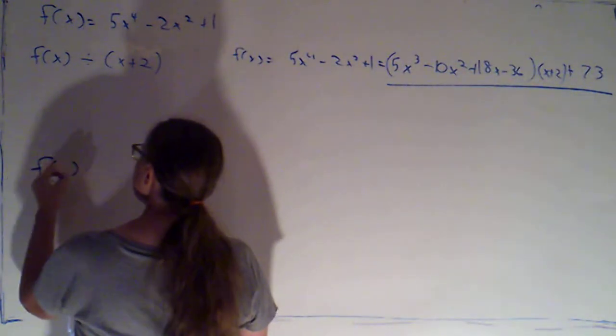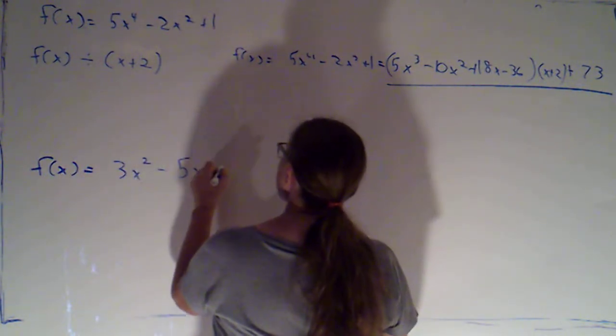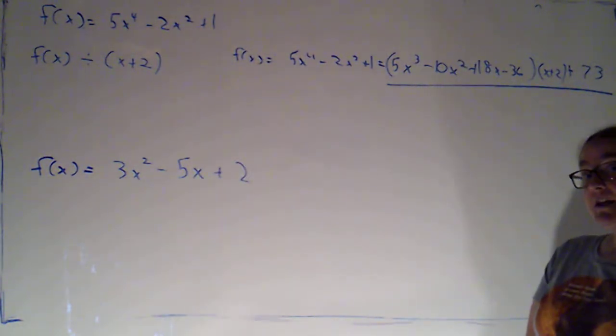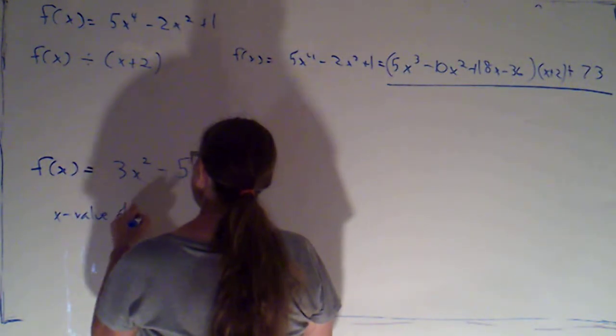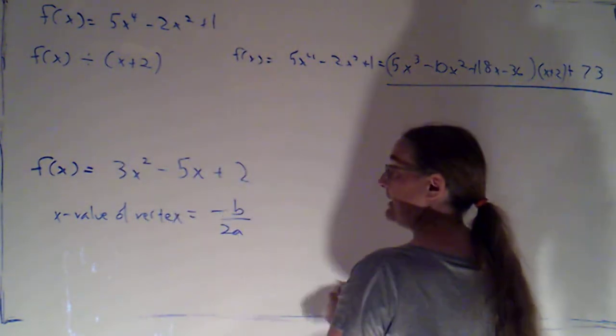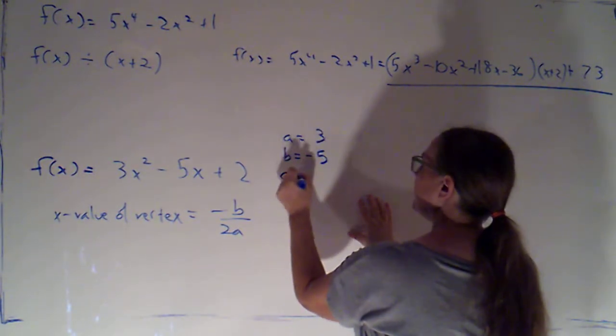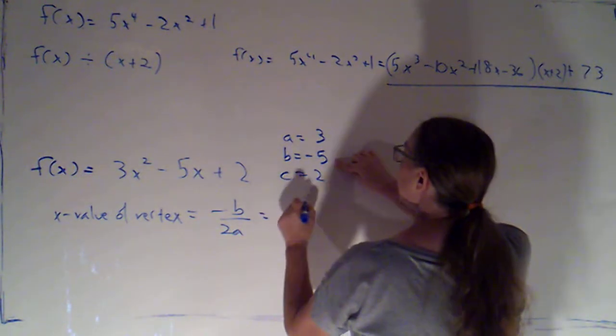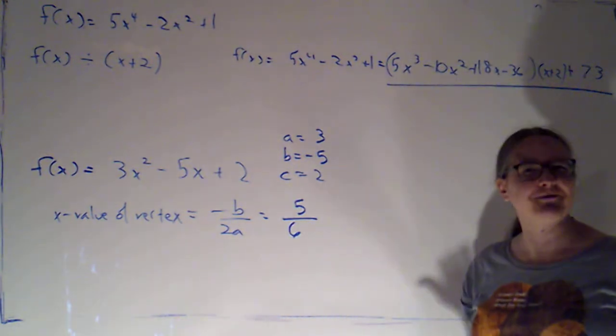Let's just suppose I had f of x is equal to 3x squared minus 5x plus 2. And let's suppose I want to find the vertex. Well, I know that the x value of the vertex is just the opposite of b over 2a. And here my a would be 3, my b would be negative 5, and just for kicks my c would be 2. So this would be 5 over 2 times 3 is 6. So we would get 5 sixths. So we've got to plug in a fraction.